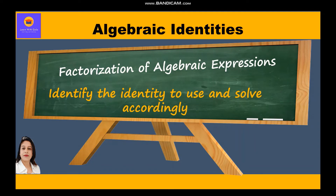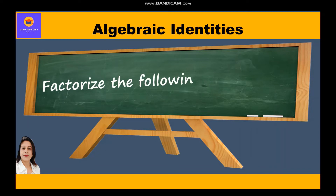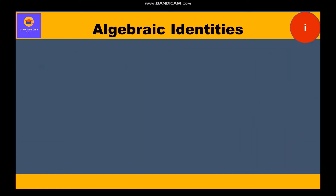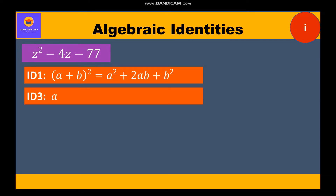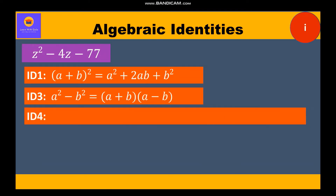Let's start with the first question: factorize z² - 4z - 77. Now, how to identify which identity to use out of the five identities we have learned. It cannot be identity 1 as all the terms are positive. It cannot be identity 3 as there are only two terms in the product. It cannot be identity 4 because that is the square of the sum of three variables, so that is also ruled out.